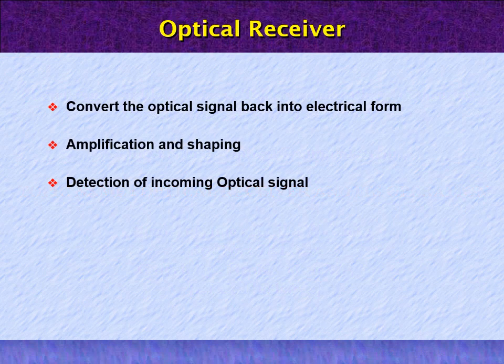First of all, what is optical receiver? The optical receiver is a critical element of an optical communication system. It determines the overall system performance. The function of optical receiver is to detect the incoming optical power and extract from it the signal — analog or digital — that is being transmitted.